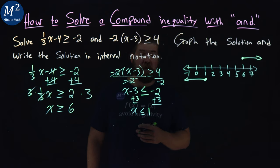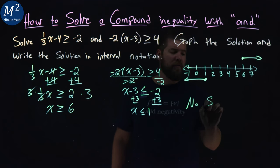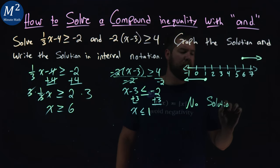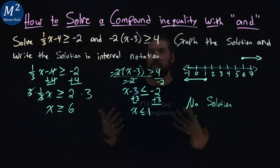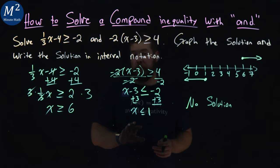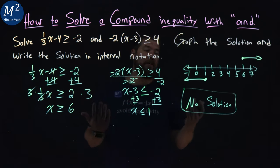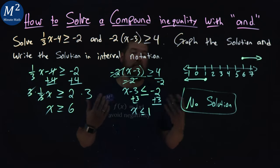This is where the tricky situation comes in. Sometimes we want to double-check our work to make sure we did it right. But in this case, there is no solution - no value or set of values that make both statements true. For this problem, the answer is no solution, and our graph is just blank.